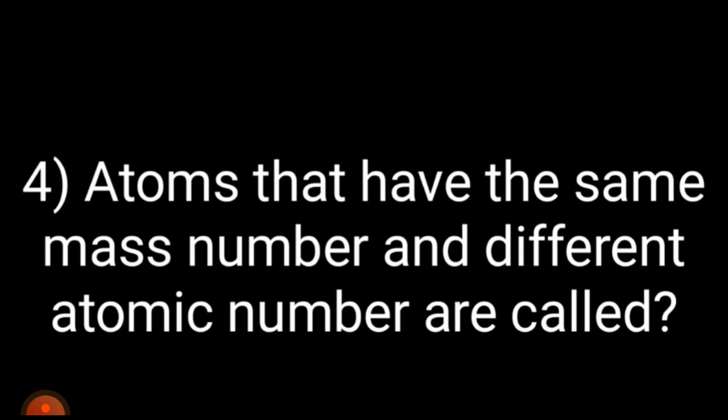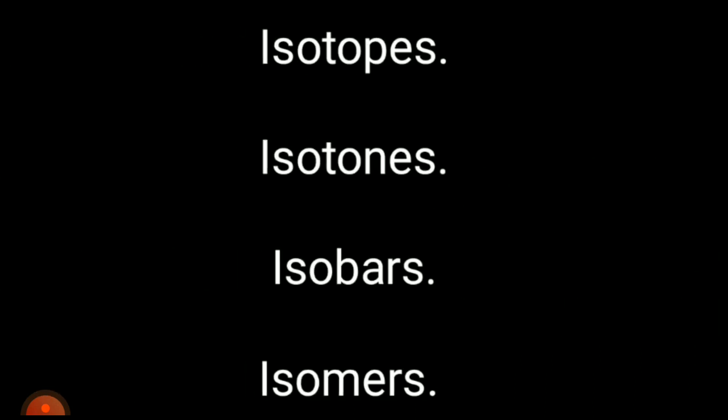Question 4: atoms that have the same mass number and different atomic number are called? Very important. Options are: A) isotopes; B) isotones; C) isobars; D) isomers. Your time starts now.